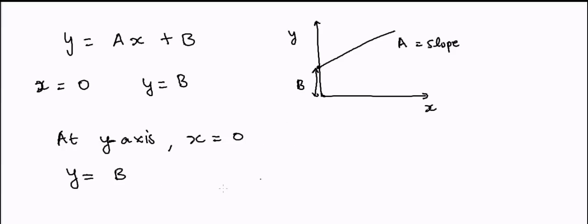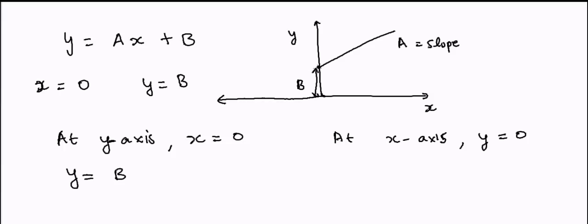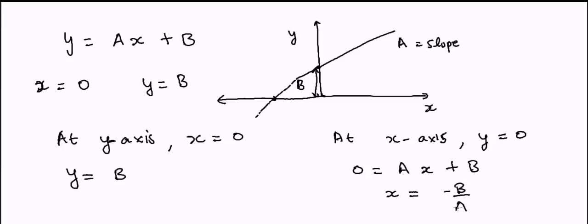If I have to calculate the x-axis intercept, on the x-axis y is equal to zero. So I extend the x-axis and find where the line intercepts it — at that point y = 0. Setting 0 = ax + b, we get x = −b/a. As you can see, the intercept will be on the negative x side, at −b/a. This is how you calculate the intercept on both the x-axis and the y-axis.